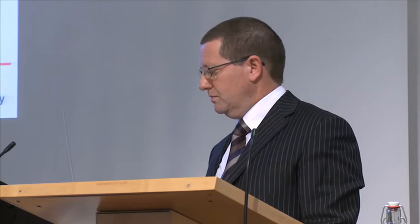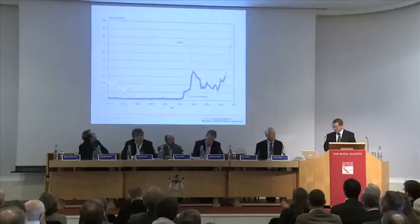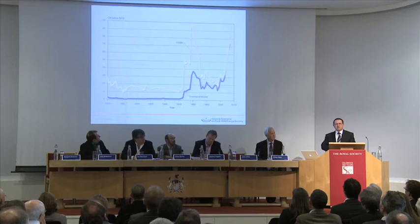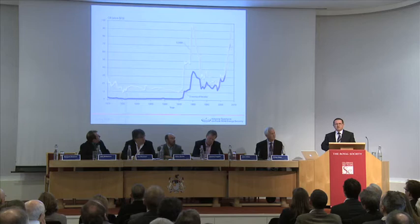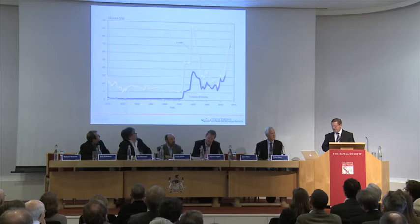Up until just short of where we are now, supply has managed to keep pace with demand, and it hasn't been that difficult to make it happen. If we look at the price of oil from 1920 to around about now, you can see that in real terms it has changed quite a lot. But if we rebase the price to 2008 dollars — the gold line — you can see it's been pretty stable. For most of the time since 1920, oil has been less than $30 a barrel.